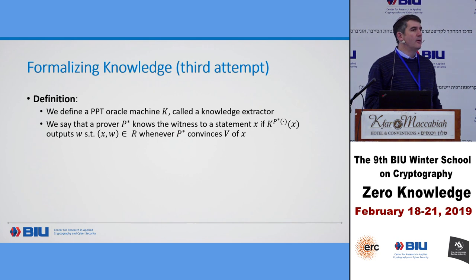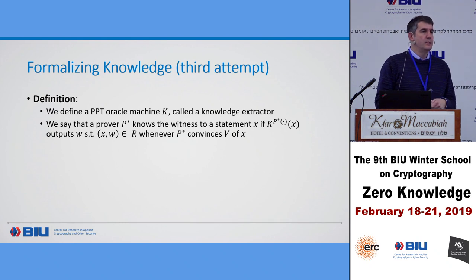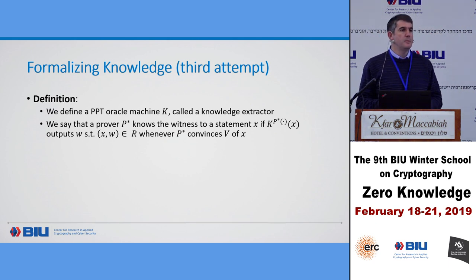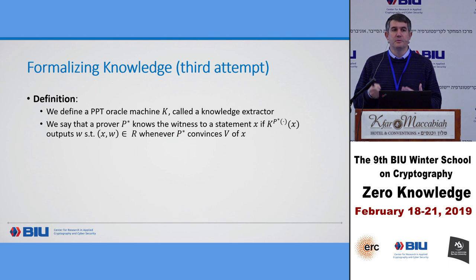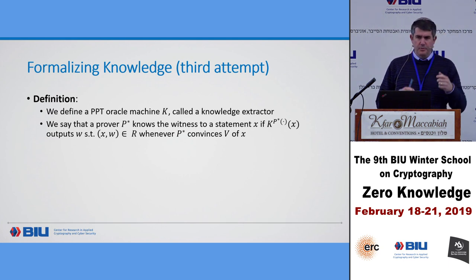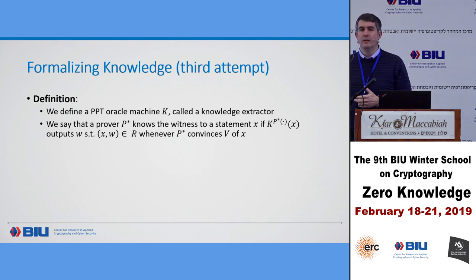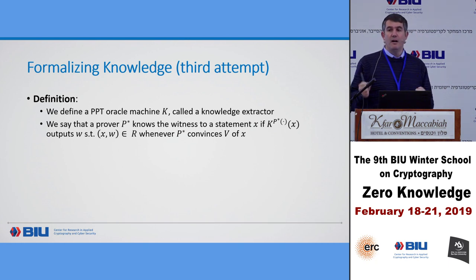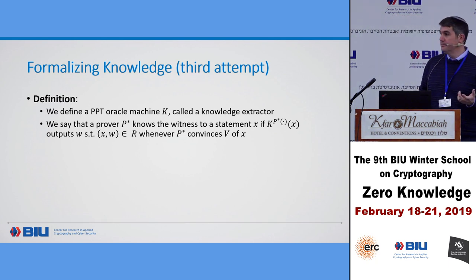The prover is called P star because it might be a cheating prover. In the context of proof of knowledge, this may be a prover trying to prove a statement without knowing the witness. In proving identity, cheating is not breaking soundness in the traditional sense — I'm not trying to prove a false statement. What I'm trying to do is convince you that I know something when I actually don't.